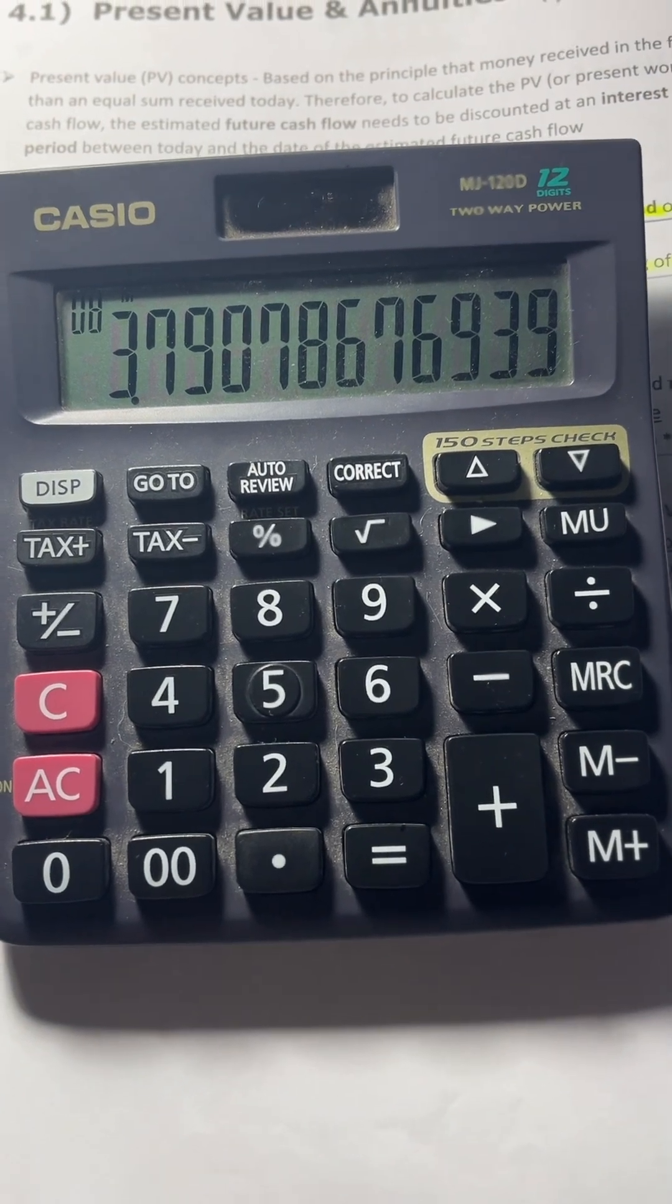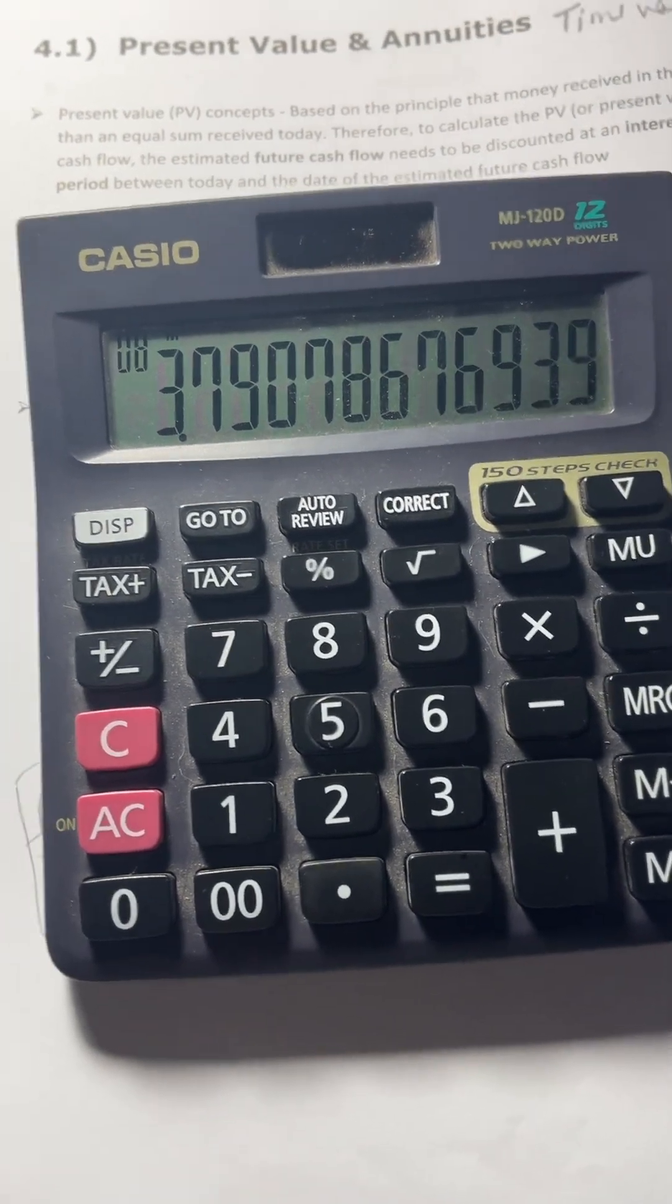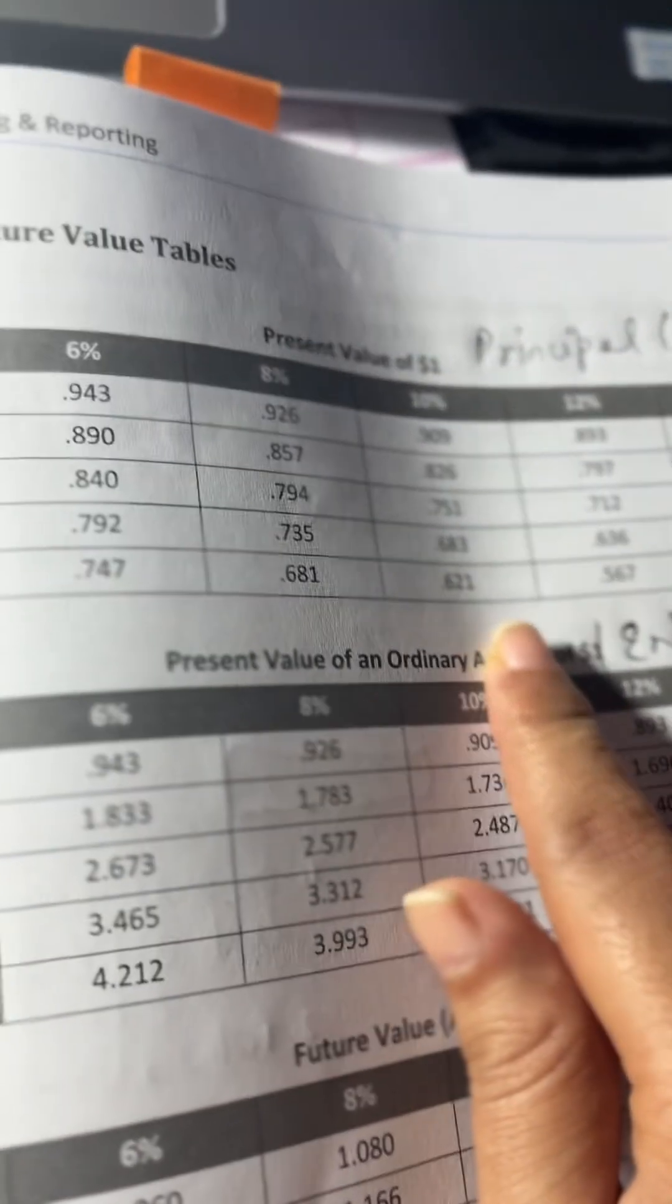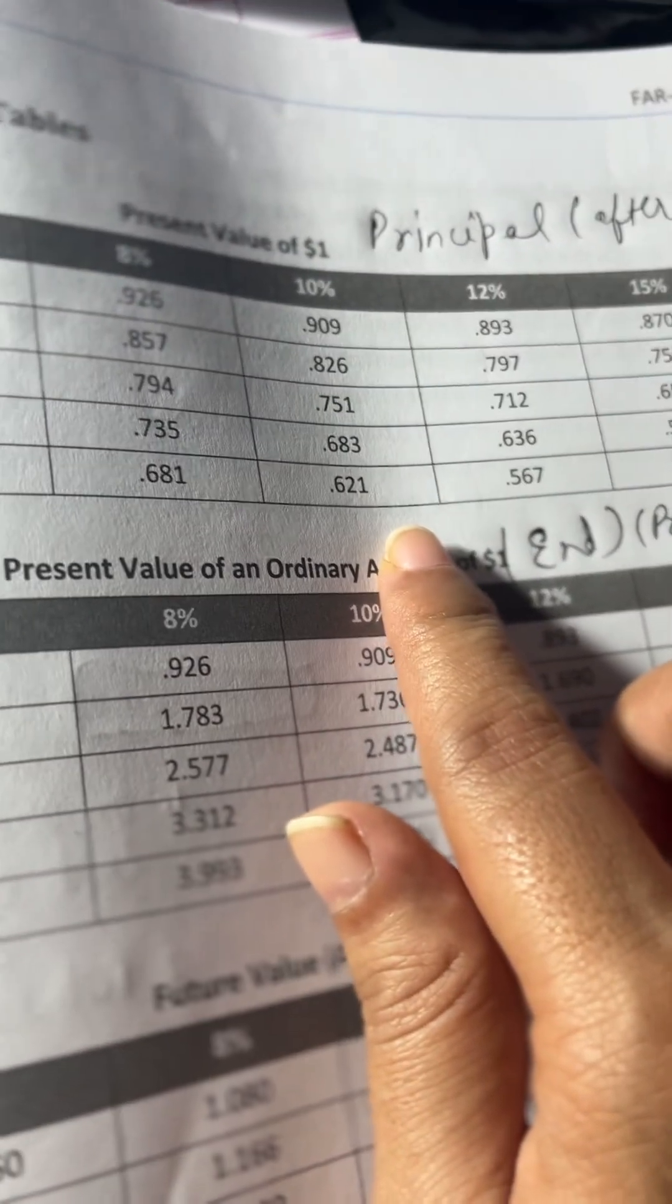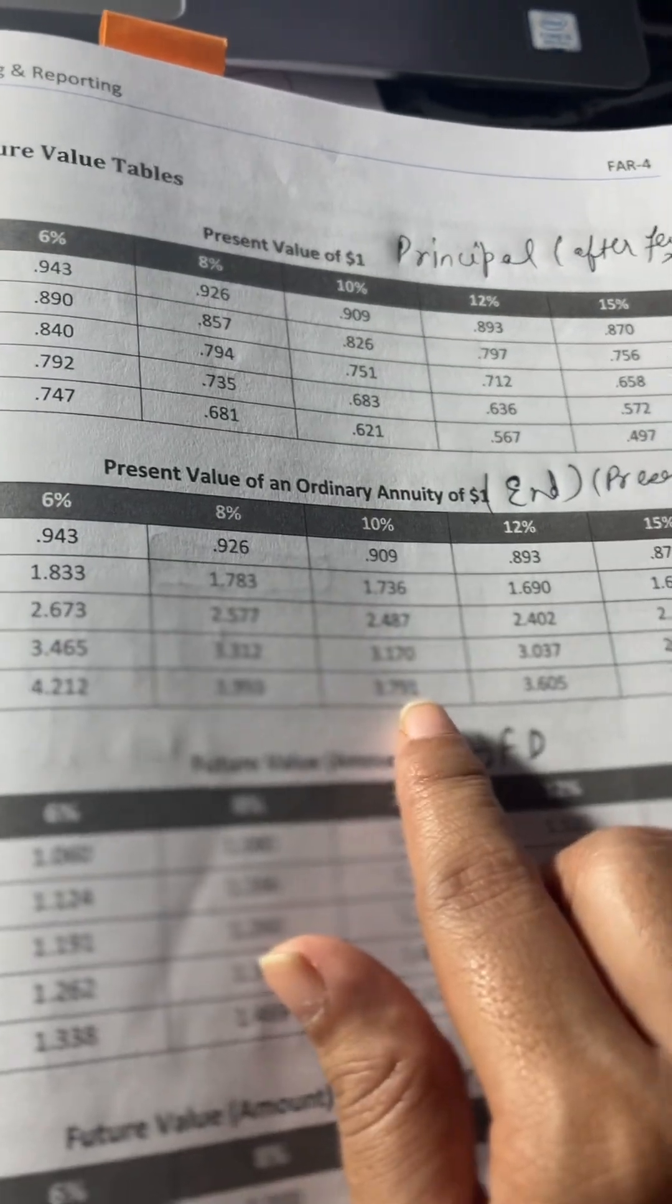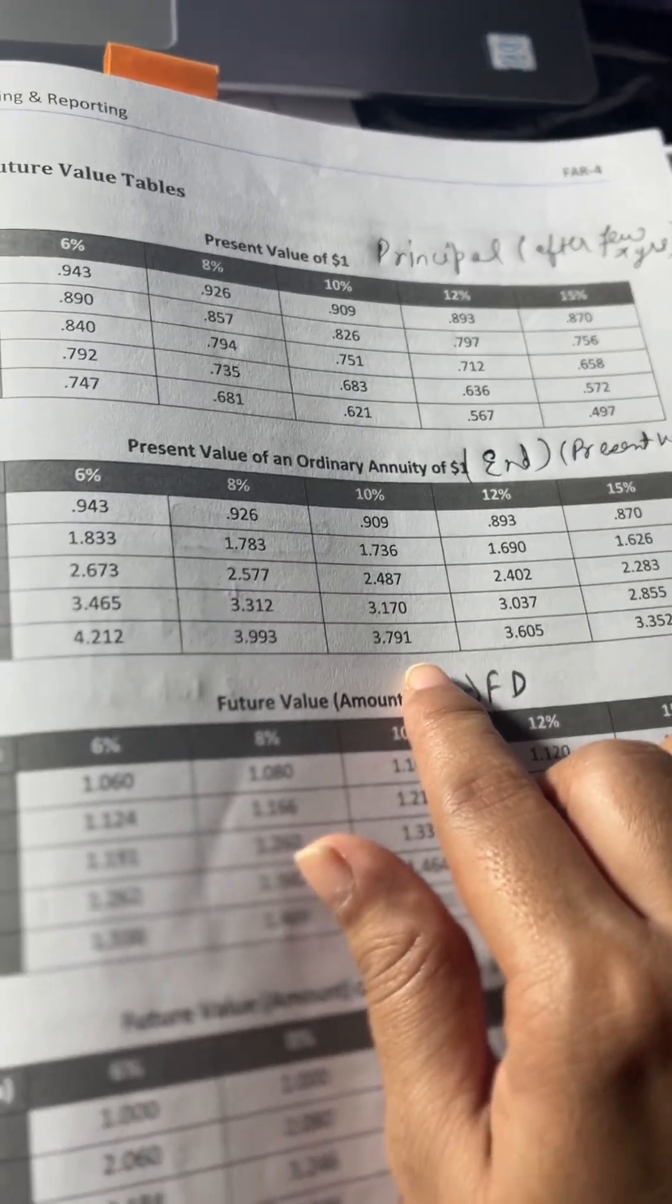value of annuity at $1. We can see the same in the book: for 10%, the present value of $1 is 6.21, and the present value of ordinary annuity at $1 is 3.791.